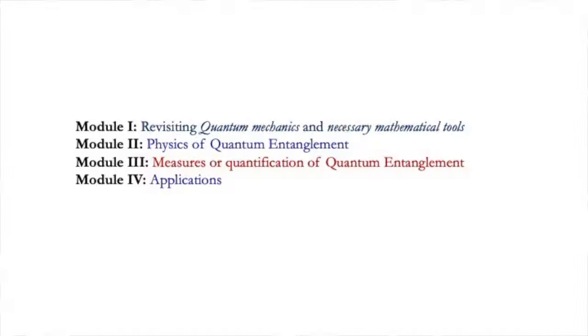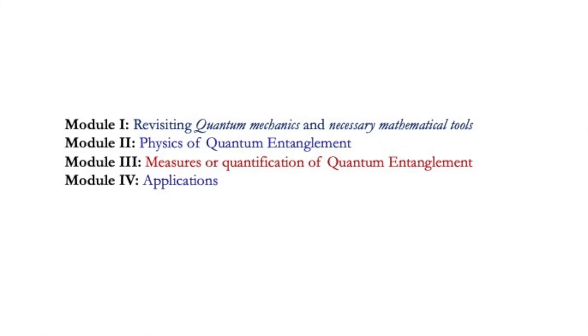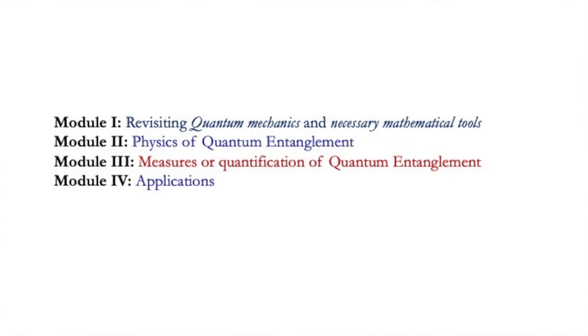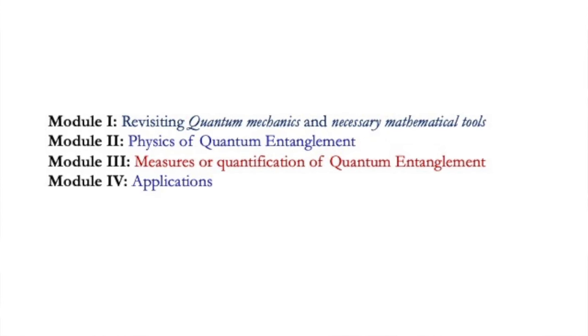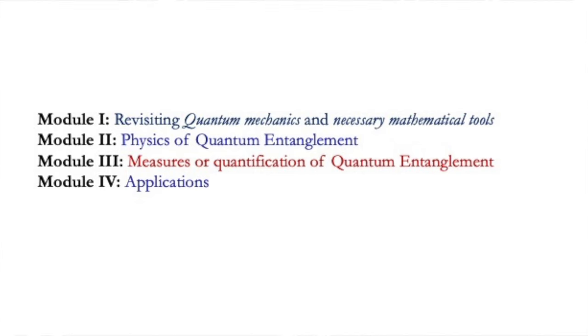This particular course is divided into four modules. In the first module, I will briefly revisit quantum mechanics and some mathematical tools necessary for understanding quantum entanglement. In the second module, I will give the physics of quantum entanglement. In the third module, we will discuss about measures of quantum entanglement, which is also called quantification, covering both discrete variable and continuous variable quantum entanglement. And in the final module, module four, I am going to discuss applications of quantum entanglement such as quantum teleportation, super dense coding, and so on.